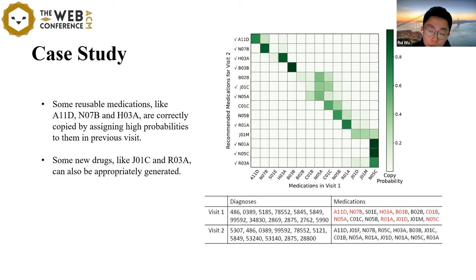We can see that some reusable medications like A11D, N07B, and H07A are correctly copied by assigning high probabilities to them in previous visits. In addition, some new drugs like J01C and R03A can also be appropriately generated. It indicates that COGNet can not only copy historical drugs according to the unhealed diseases, but also generate new drugs based on the new diagnostic results.